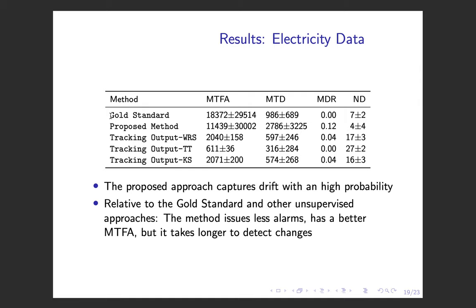Not far from the gold standard, which uses the actual performance of the predictive models as input. These other unsupervised approaches track the output of the models. This one uses the Wilcoxon rank-sum approach, this one uses the t-test, and this one uses the Kolmogorov-Smirnov test. In general, our approach is more conservative, although it actually captures the drift with high probability.